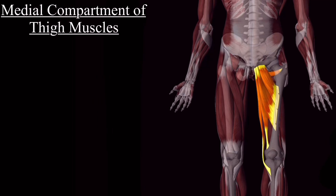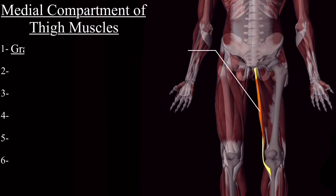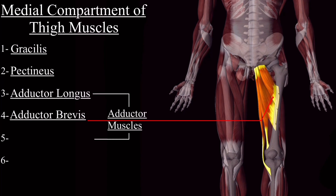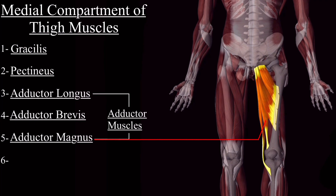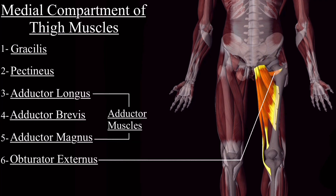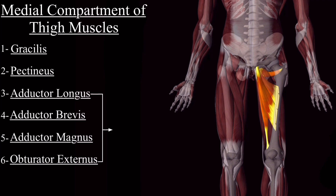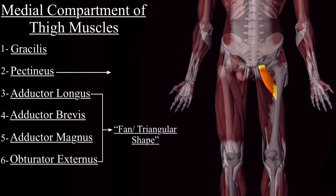The medial compartment of the thigh includes six muscles: the gracilis muscle, the pectineus muscle, and the three adductor muscles — adductor longus, adductor brevis, and adductor magnus — and the sixth one is the obturator externus muscle. Among them, adductor longus, adductor brevis, adductor magnus, and obturator externus are fan-shaped or triangular-shaped muscles, while the pectineus muscle is a quadrangular-shaped muscle.